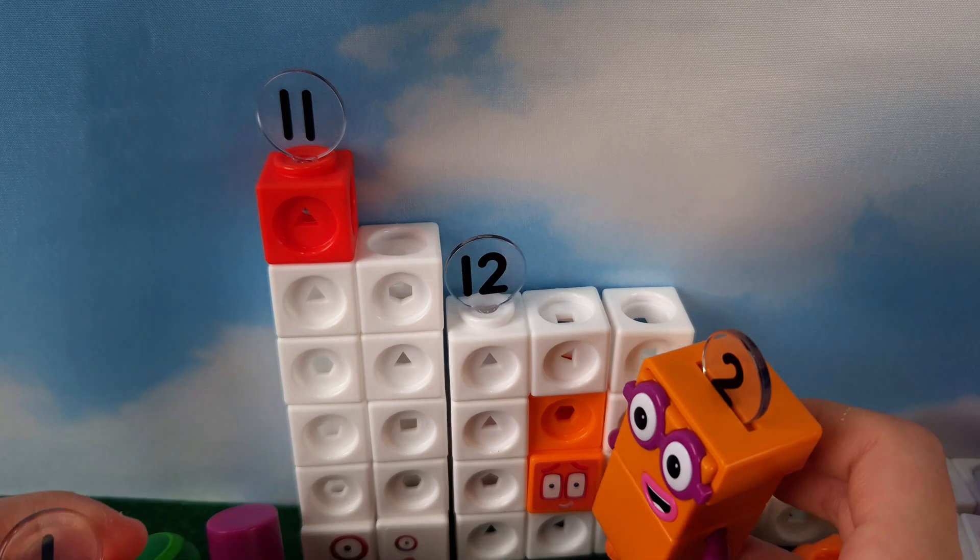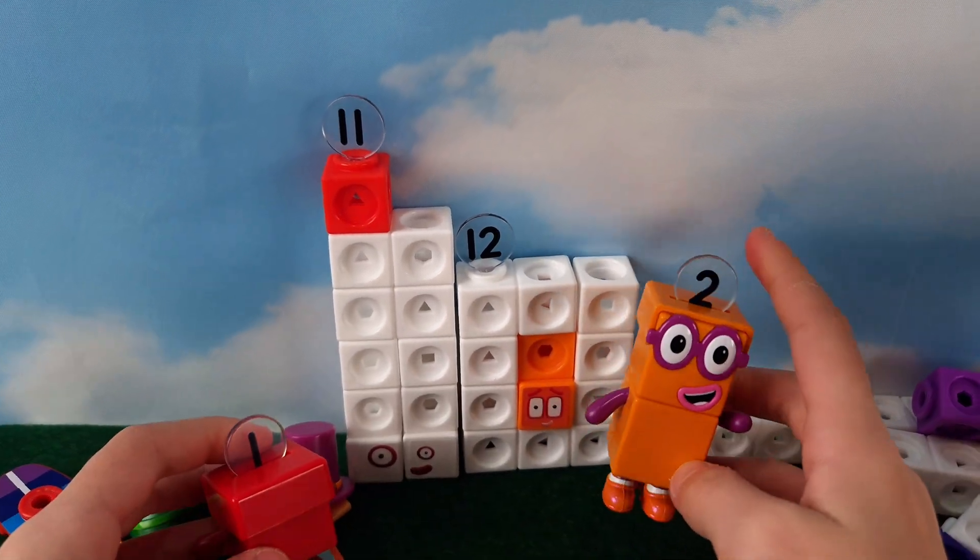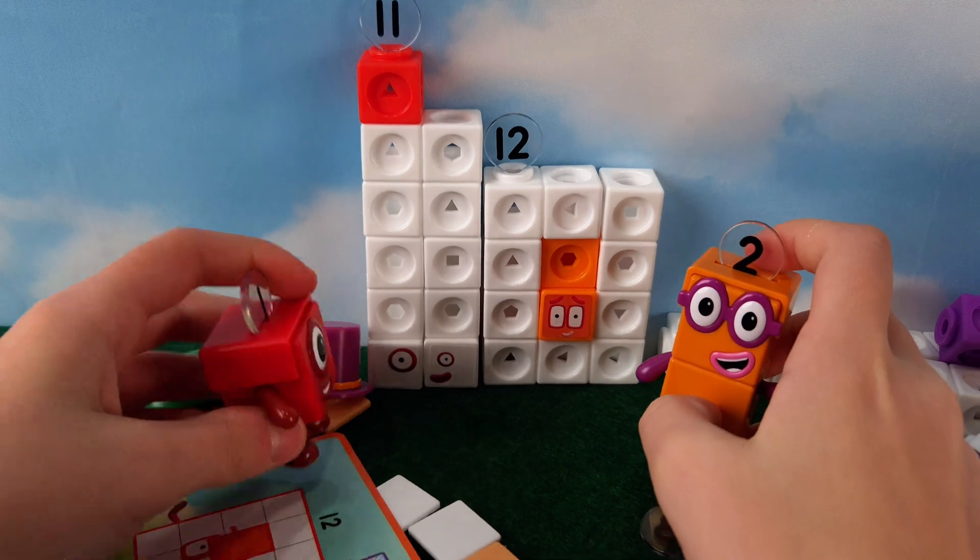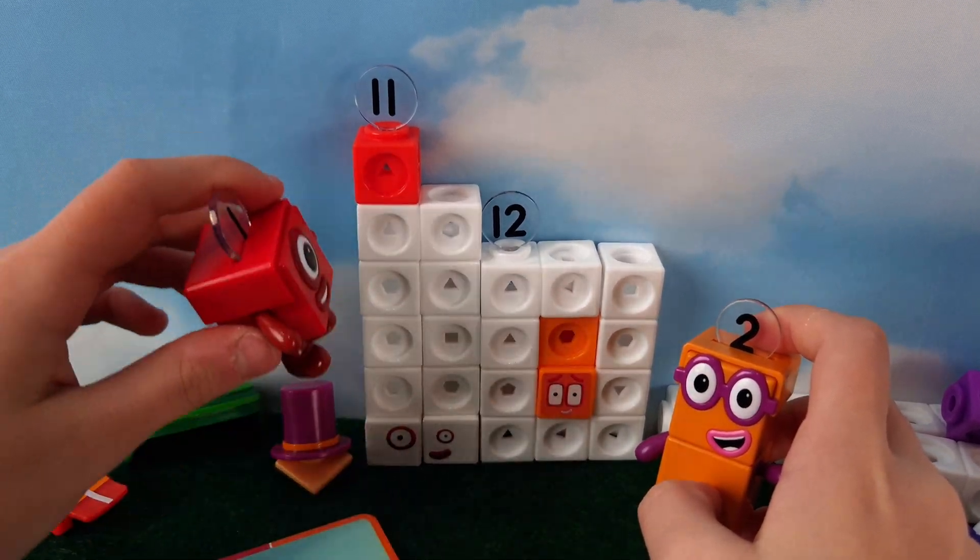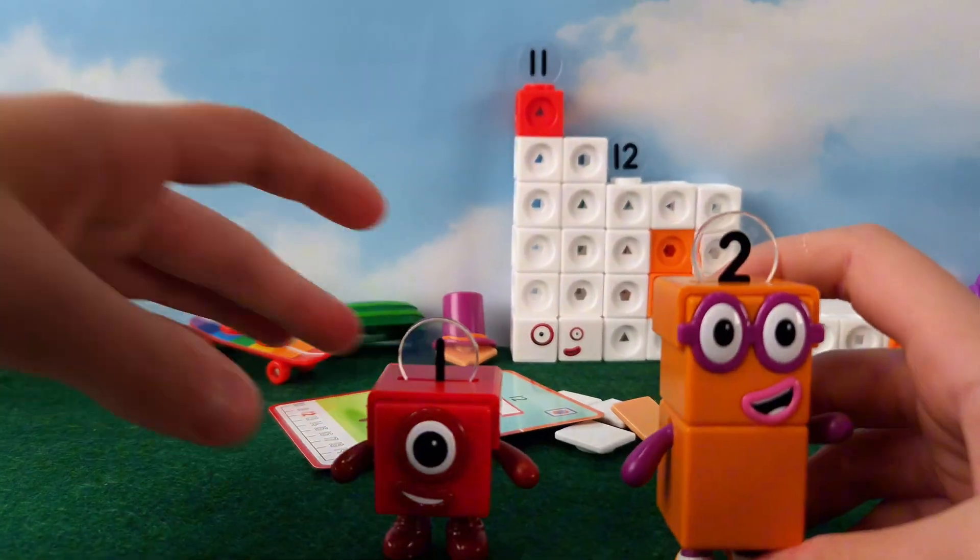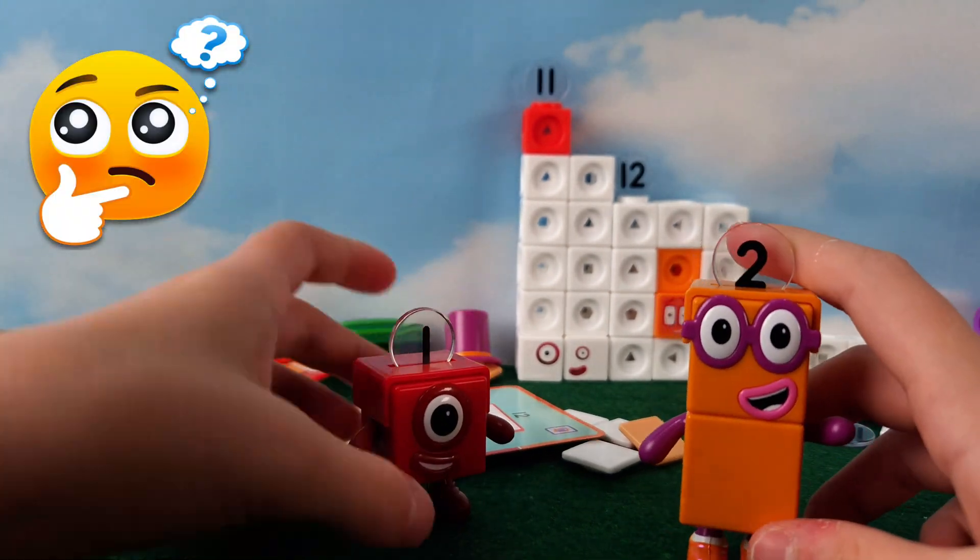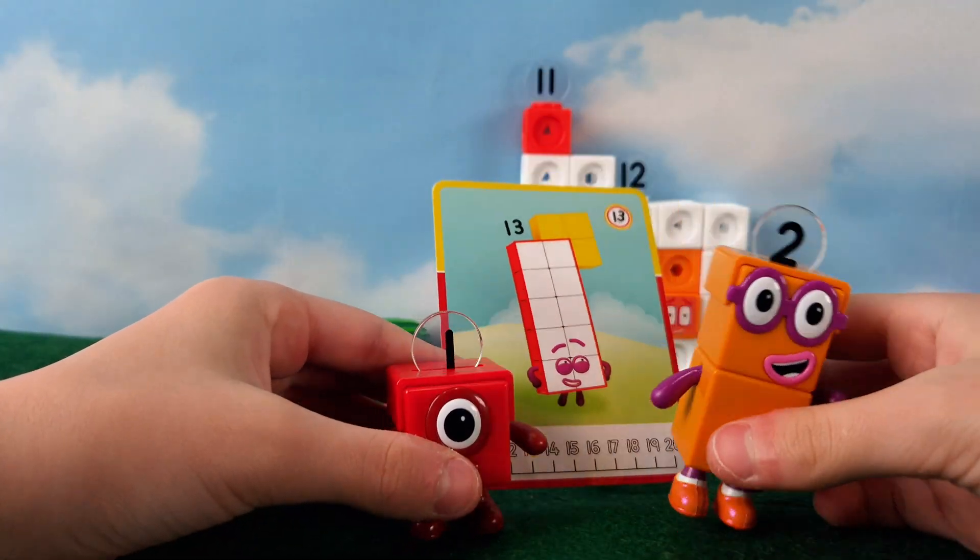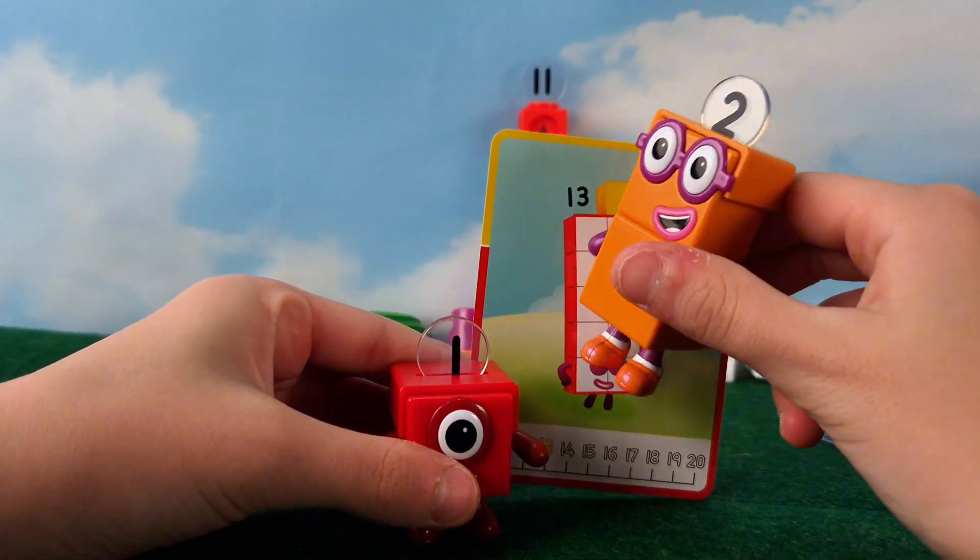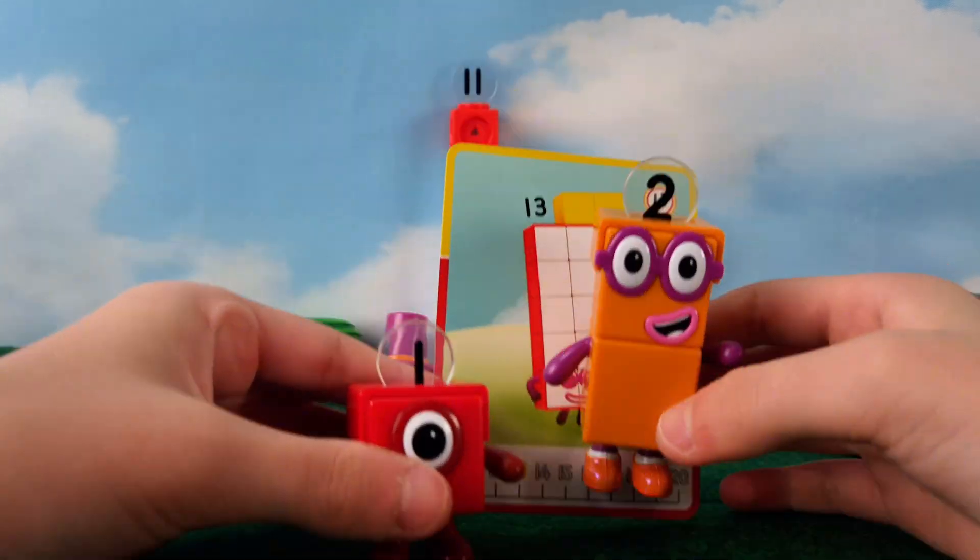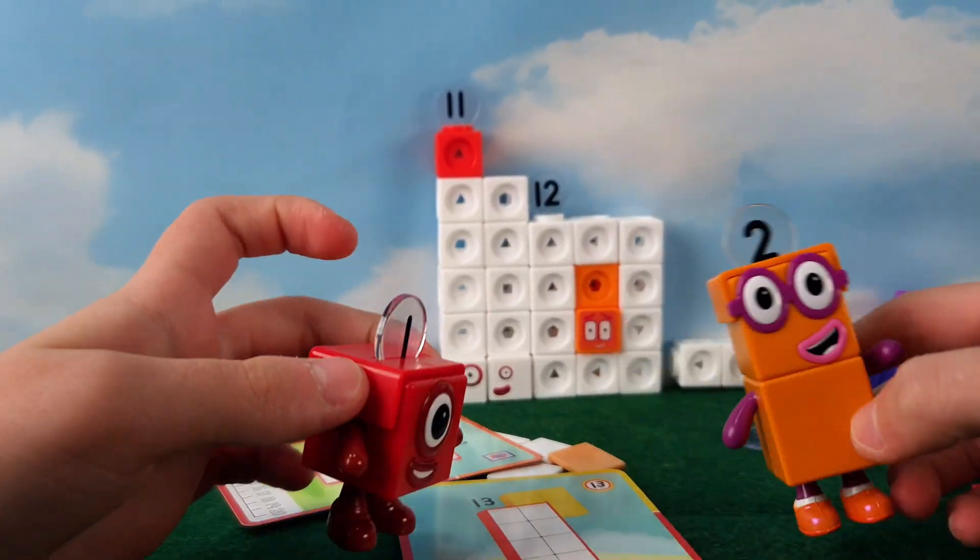Look, there's two blocks in the middle of number twelve. I'm two. And around is ten. Same with eleven. He's ten with a one on the top. Does that mean thirteen will have ten and three blocks? Yep, we're right. If we look at his card, he's just like number eleven but with three blocks on the side. Hey, he looks like a ponytail. Let's make him.